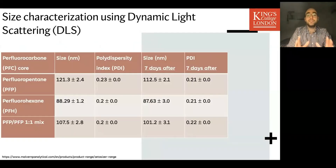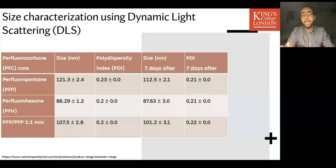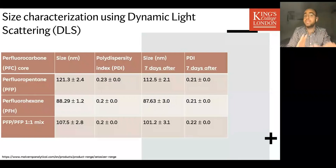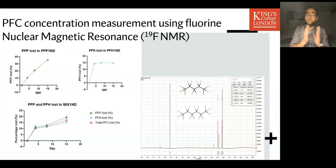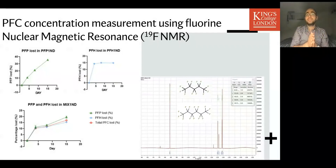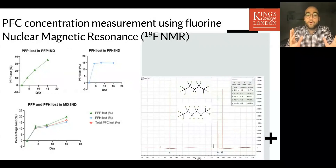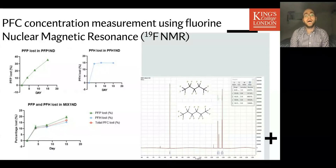First, we use dynamic light scattering to measure the size. Using lower boiling point perfluoropentane and higher boiling point perfluorohexane, we can see that the size is around 100–120 nanometers, the polydispersity index is at acceptable rates, and most importantly, when stored in the fridge they remain relatively stable for at least seven days. We also developed a technique using fluorine NMR to assess the perfluorocarbon loss over storage conditions for a couple of weeks. As expected, there is higher loss with perfluoropentane nanodroplets compared to perfluorohexane, but they can still cavitate and be used for experiments.